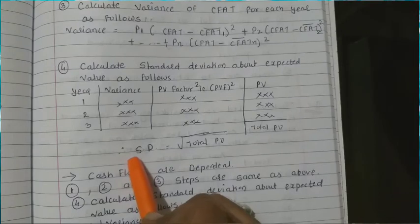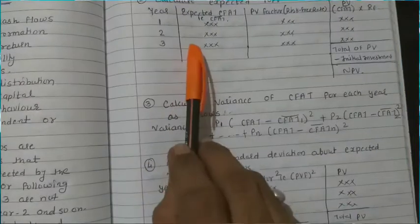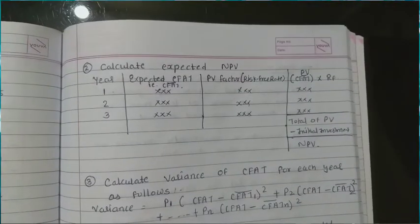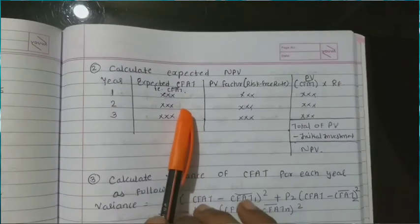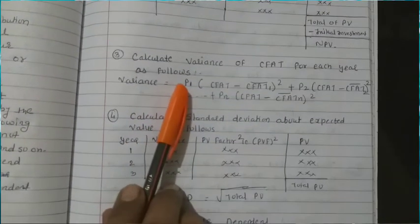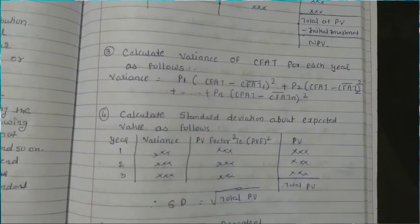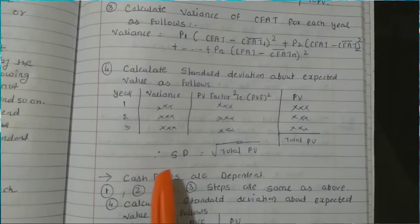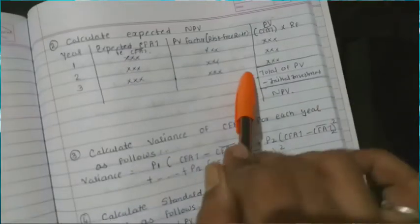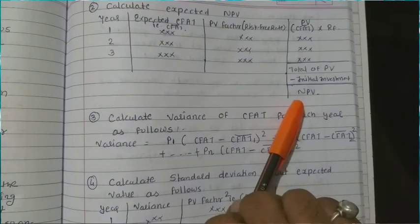So ultimately there are four steps to follow. Step 1: Expected CFAT. Step 2: Expected NPV — based on the CFAT. Step 3: Variance. Step 4: Standard deviation based on the variance. Additionally, covariance can be calculated as standard deviation divided by expected NPV, giving us the coefficient of variation.